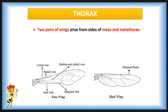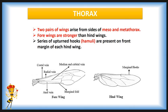The honeybee has two pairs of wings arising from the sides of the meso- and metathorax. The fore wings are stronger than the hind wings. A series of upturned hooks called hamuli are present on the front margin of each hind wing. A curved fold on the rear margin of the fore wing works as a coupling apparatus for holding the hamuli, resulting in unified wing action during flight and increasing the wingspan.